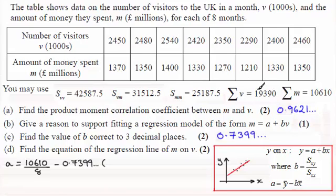So it's going to be the total of V values, 19390, and that will be divided by the number of values we've got, which is 8.